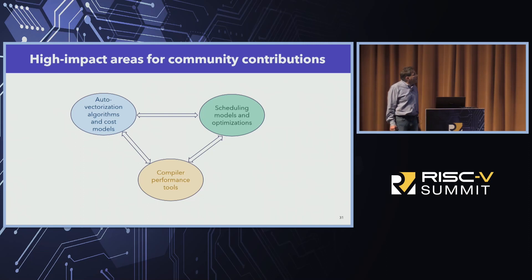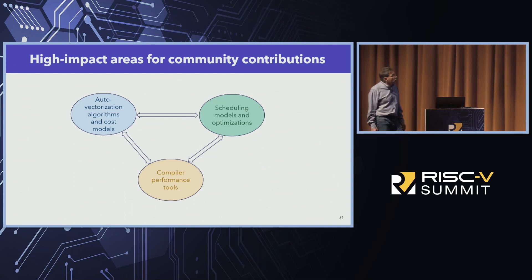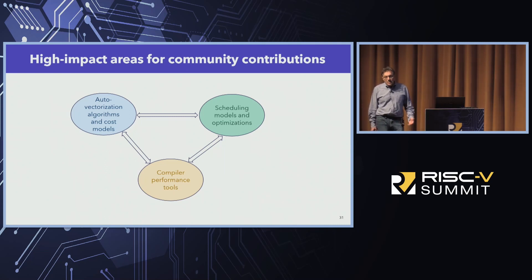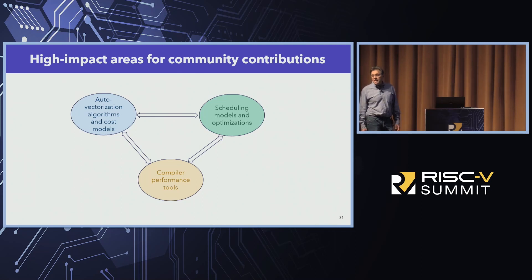In my opinion, these are some high-impact areas for community contributions. I'll start with auto-vectorization algorithms and cost models, simply because on data-parallel applications they tend to deliver very strong performance impact. Of course, for every new processor, scheduling models and backend optimizations are important, and such algorithms deliver consistent improvements on both scalar and vectorizable code. Compiler performance tools are also important right now, simply because there is a scarcity of RISC-V hardware, and having good tools can really shorten the compiler development cycle.